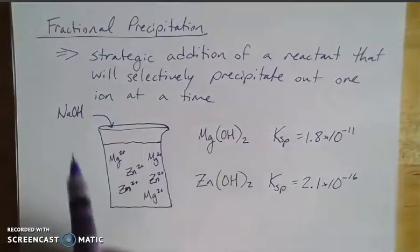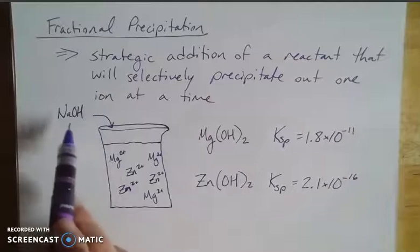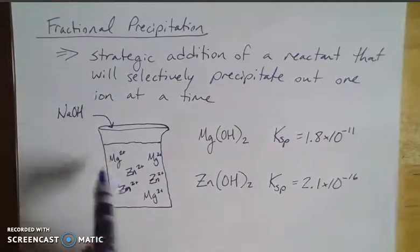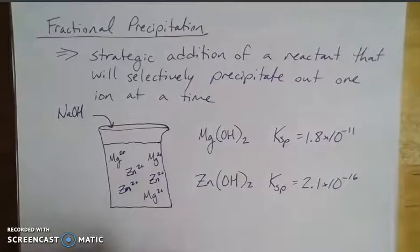So we put sodium hydroxide in here. The hydroxide ions are going to react with both the magnesium and the zinc, but which one is going to precipitate out first?